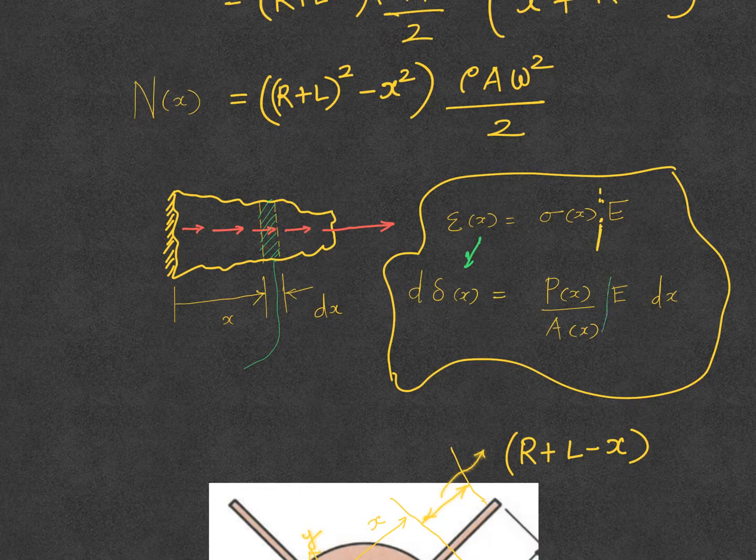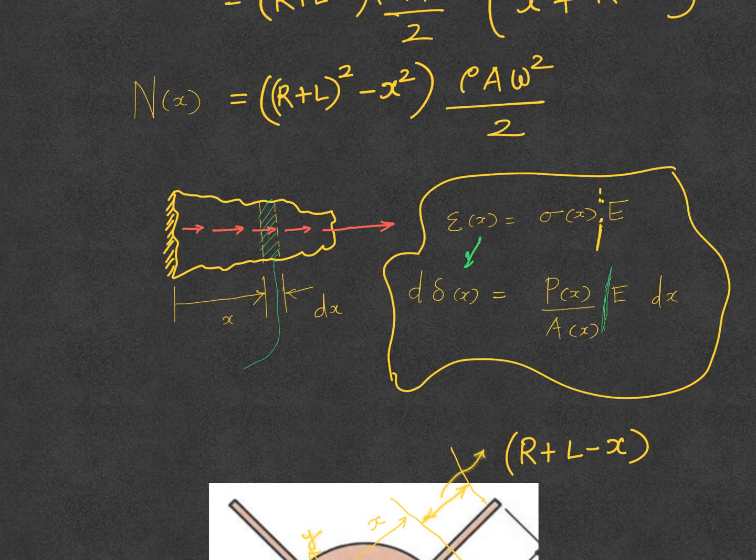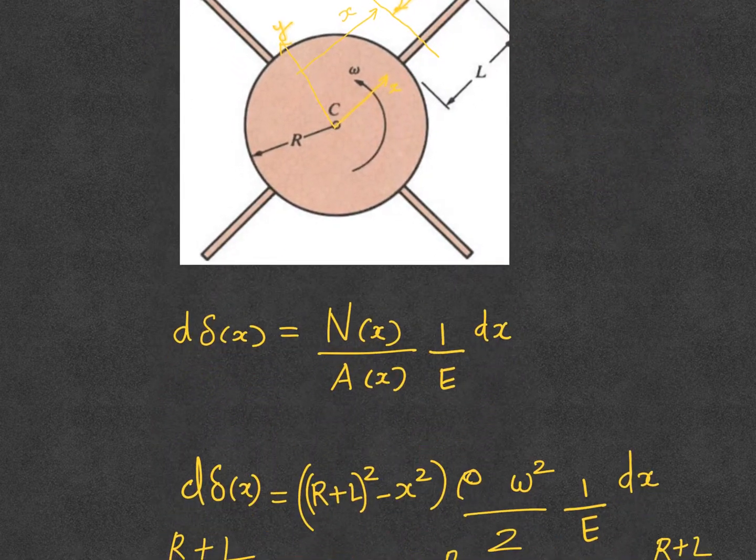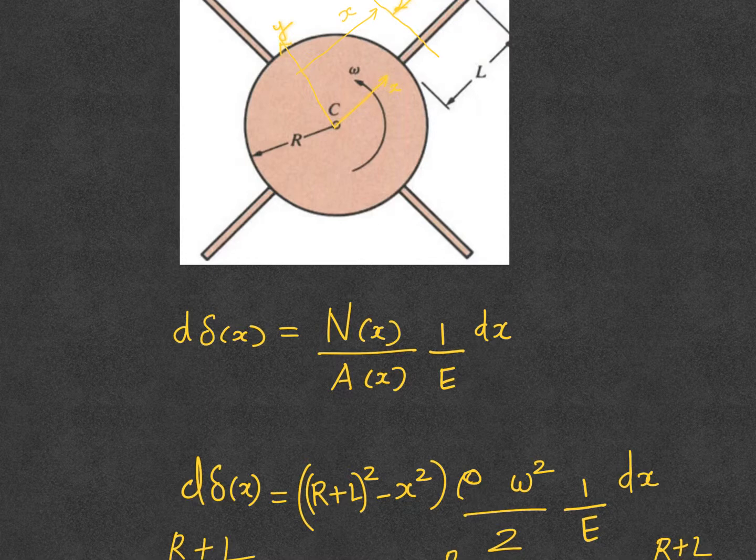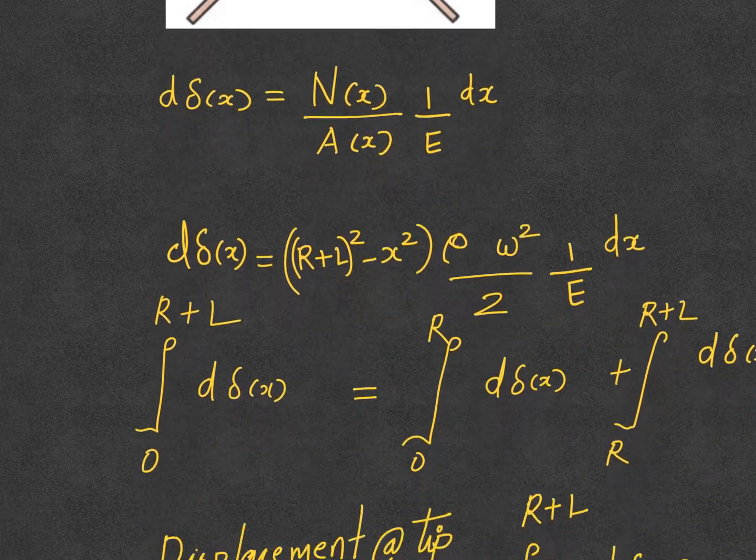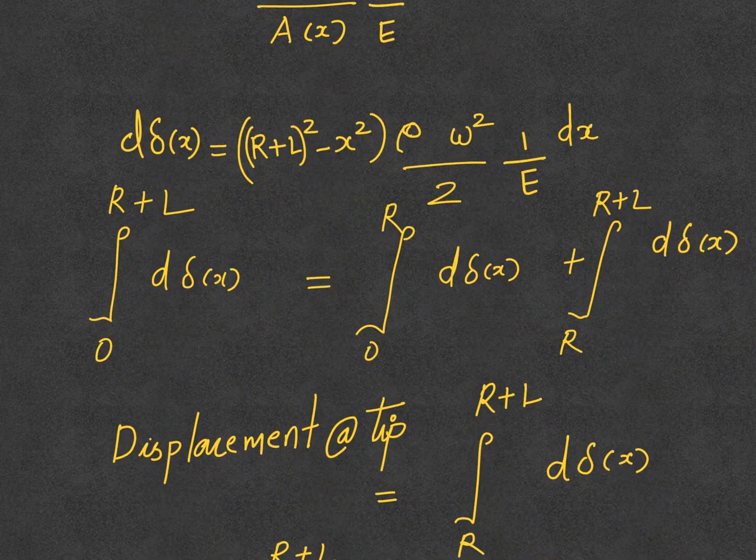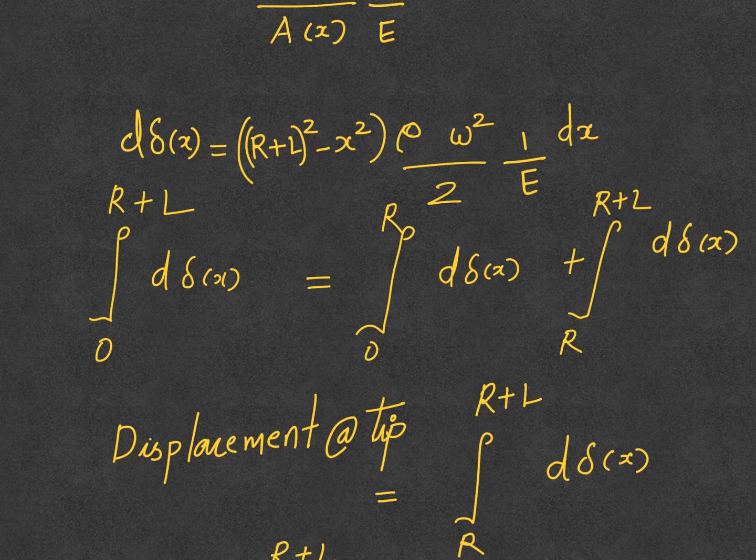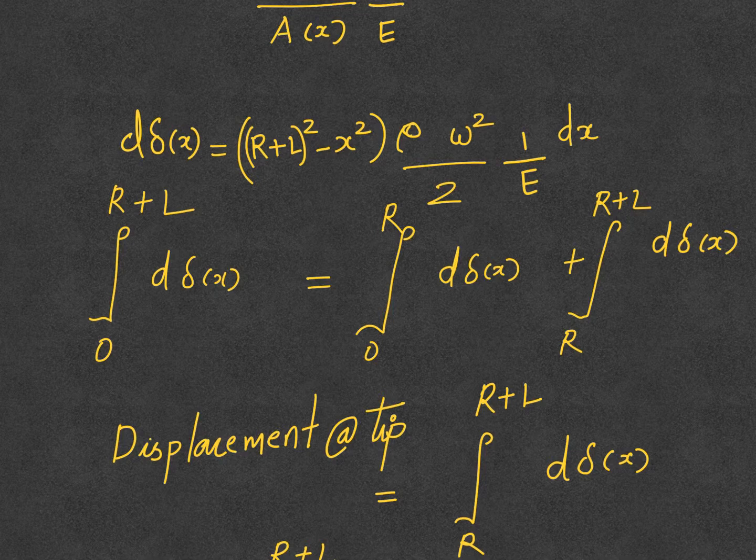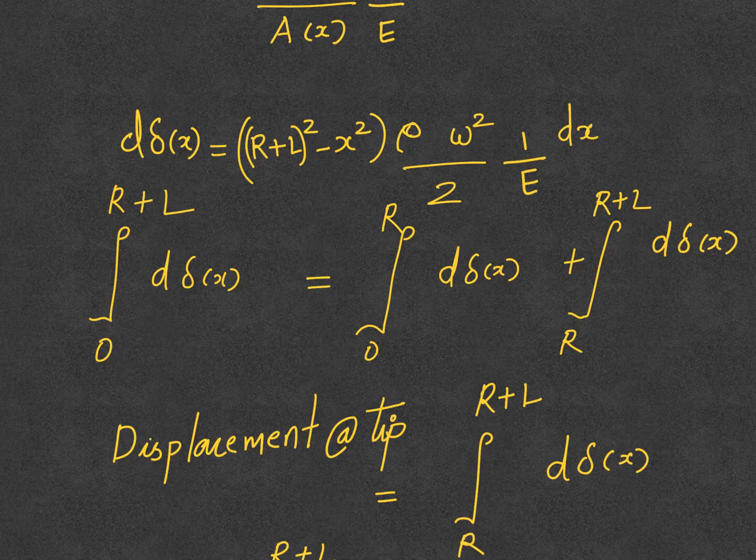Now we have an expression for the incremental displacement, the incremental elongation from that small section of length dx. To get the total deformation at the tip of the blade, you need to integrate. You need to sum up the contributions from each of those small dx's. Once you integrate throughout the length, you will get the deflection at the tip because the total deflection is accumulating.